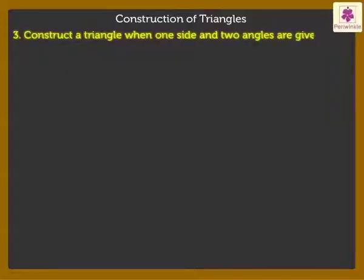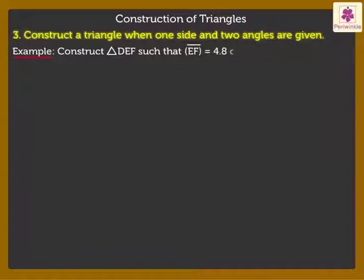Finally, let's learn how to construct a triangle when one side and two angles are given. Construct Triangle DEF such that Segment EF is equal to 4.8 cm, Angle E is equal to 30 degrees and Angle F is equal to 80 degrees.